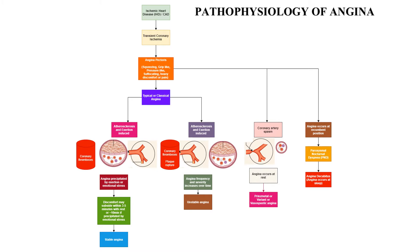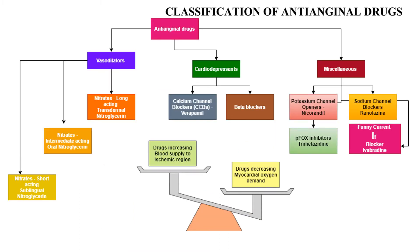The classification of anti-anginal drugs includes two categories: drugs that increase blood supply to the ischemic region, or drugs that decrease myocardial oxygen demand. These include vasodilators — most widely used are organic nitrates, available in short-acting formulations for immediate cases, intermediate-acting, and long-acting for prevention. There are also cardio-depressants which reduce the workload of the heart: calcium channel blockers and beta blockers.